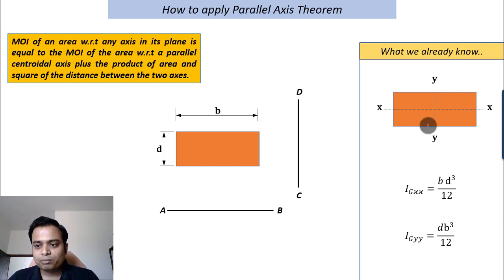If you have a rectangle, let's say the rectangle's maximum width is b and the depth is d. For such a rectangle, the moment of inertia about centroidal xx is equal to bd³ over 12, and the moment of inertia with respect to centroidal yy is equal to db³ over 12.